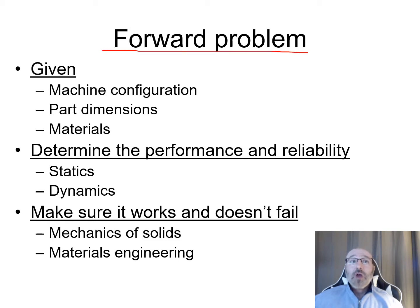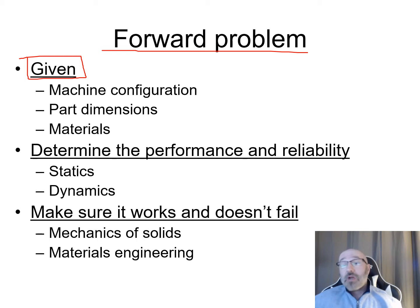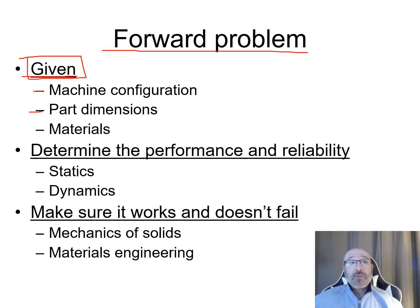For a forward problem, recall there's some specific given information that we have as we begin the design process. This may be information provided from the client, customer, funding agency of a grant, or research project. Either way, we're given information about the machine configuration, what the part dimensions need to be, and what materials we need to use — these are already specified.